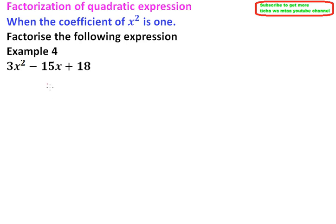So we can factorize this and because the coefficient of x squared is not equal to 1, we first of all make it 1 by dividing throughout by 3. So we have 3x squared minus 15x plus 18.